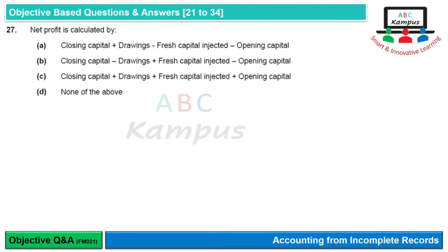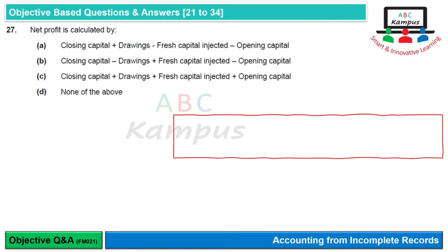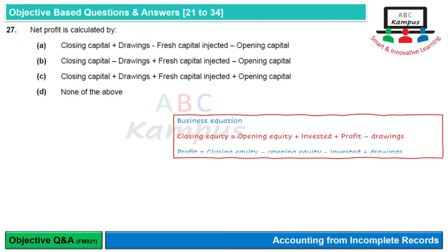Question 27: Net profit is calculated by? Closing capital, drawings, fresh capital, और opening capital का data दिया हुआ है — यानि business equation से related data। Business equation के मुताबिक: closing equity = opening equity + amount invested + profit − drawings। इसको profit के लिए rearrange करते हैं।